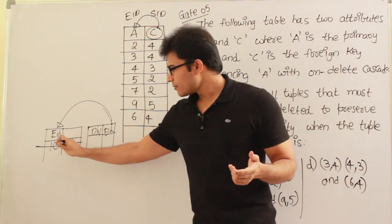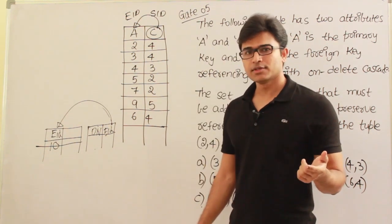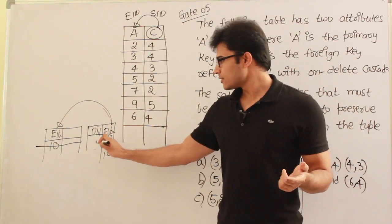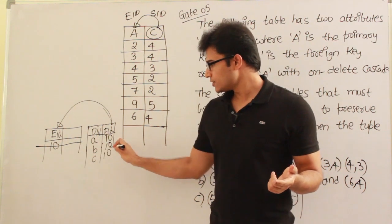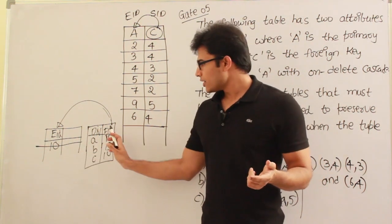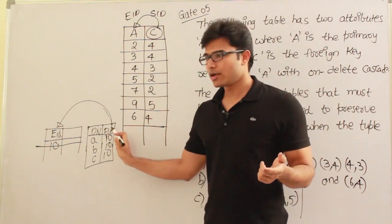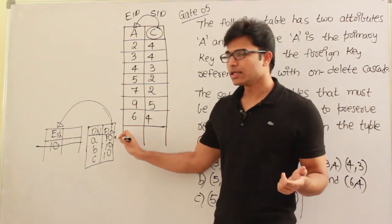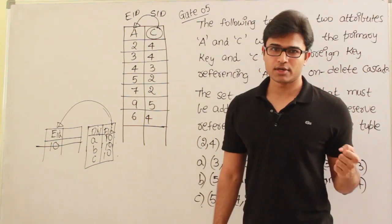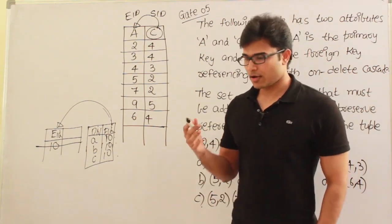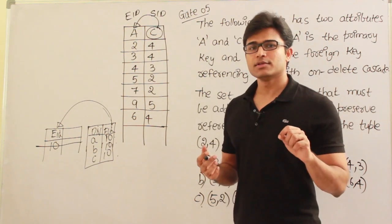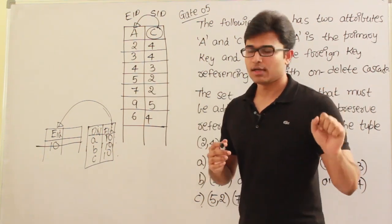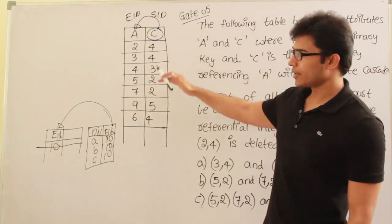Let's say you are going to delete employee number 10. On delete cascade means all the dependents who are depending on employee number 10 should all be deleted. If there are three dependents A, B, C for employee 10, and this EID is the foreign key referencing the primary key, then if you delete an employee, you are supposed to delete all the dependents on that employee. That is on delete cascade — whenever you delete a tuple, that delete effect cascades everywhere.